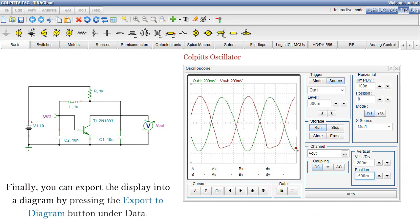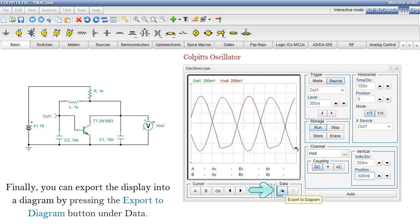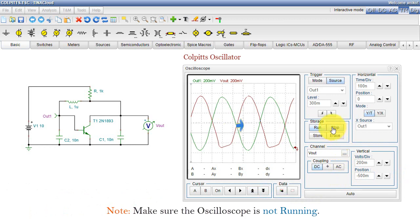Finally, you can export the display into a diagram by pressing the Export to Diagram button under Data. Note, make sure the oscilloscope is not running.